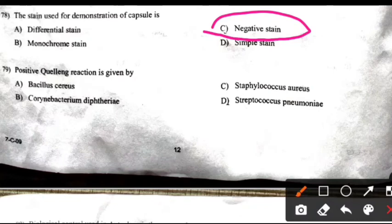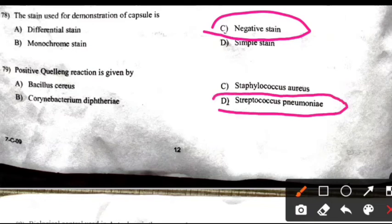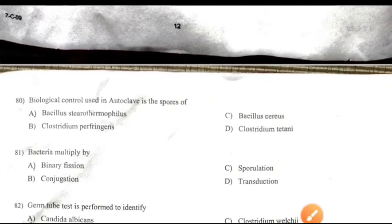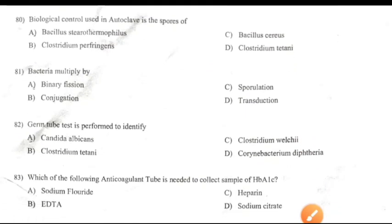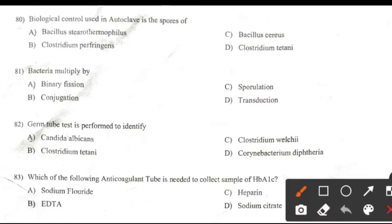Positive coagulase reaction is given by: Right answer D: Staphylococcus aureus. Biological control used in autoclave is a spore of: Right answer A.